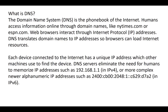Each device connected to the internet has a unique IP address which other machines use to find the device. DNS server eliminates the need for humans to memorize IP addresses such as 192.168.1.1, or more complex newer alphanumeric IP addresses. The computer doesn't really understand text, but with the help of DNS, which translates google.com into an IP address, it's able to send it back to you so that you can locate the Google server and receive the information you need.